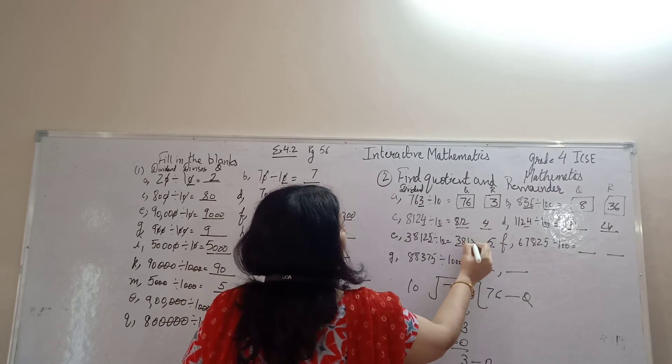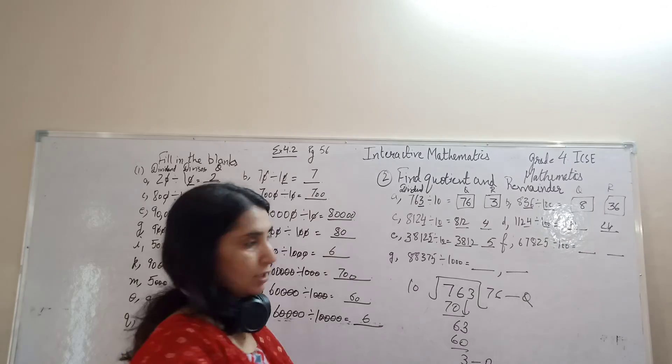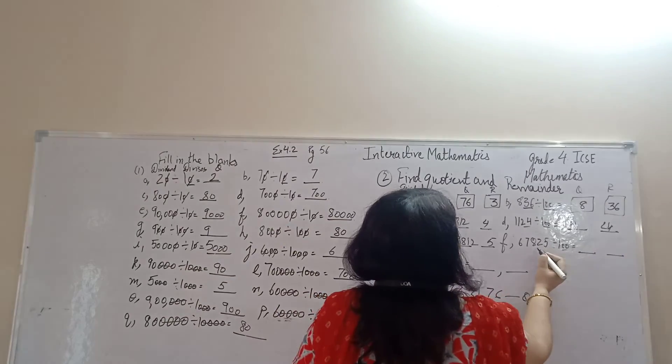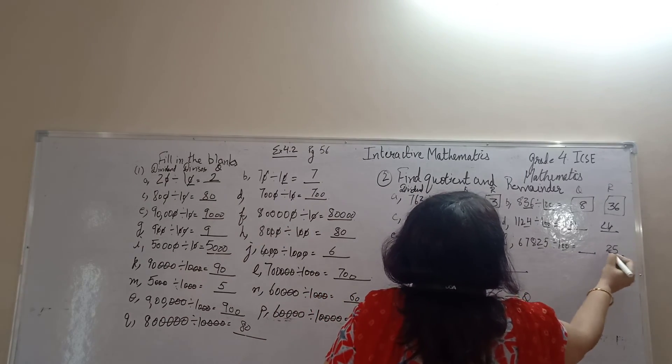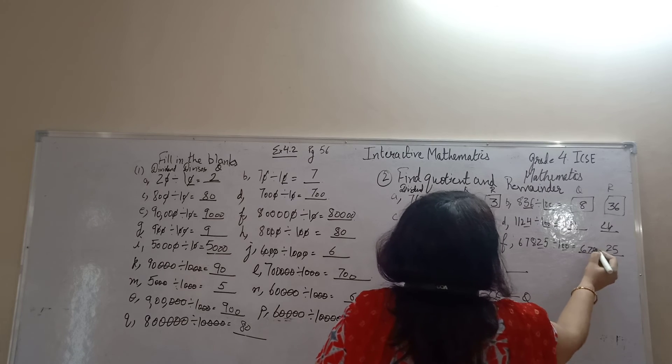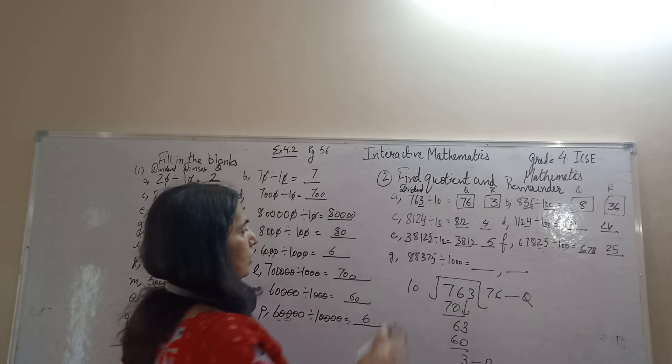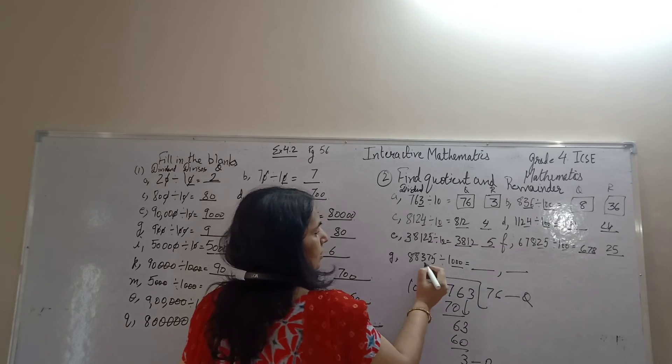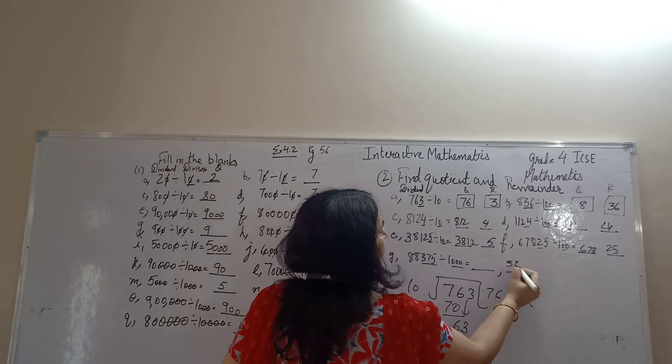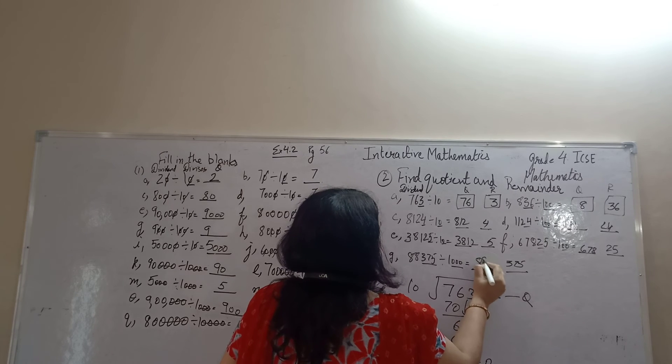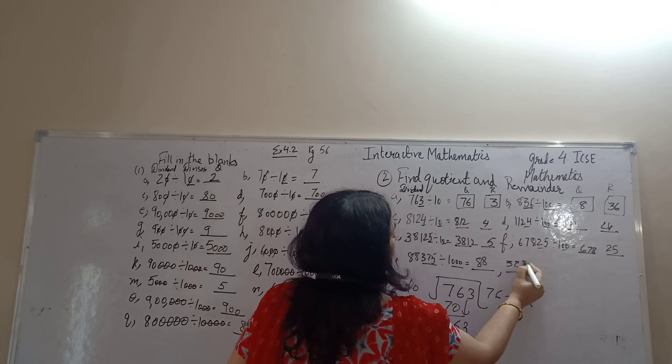2 zeros, 25 is remainder. 678 is your quotient. 3 zeros, with number 375 is remainder. 88 is your quotient.